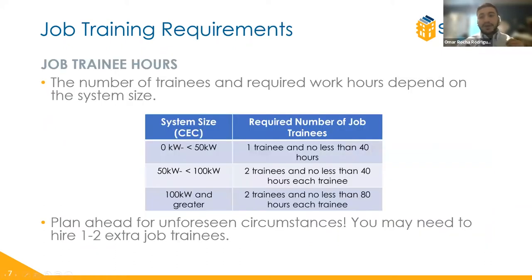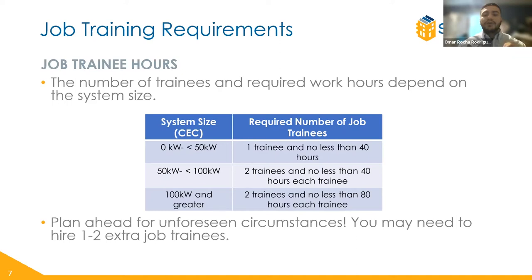Regarding job training hours, SOMA requires contractors to hire job trainees based on the size of the system being installed. A system sized between 0 to 50 kilowatts will need to hire one job trainee who will work no less than 40 hours. Larger systems over 100 kilowatts will require two job trainees to work at least 80 hours each. It is a good idea to consider hiring more job trainees than the project requires, in case any trainees leave their position early — voluntarily or involuntarily — before completing the required number of work hours. Contractors will be required to fulfill the remaining training hours.